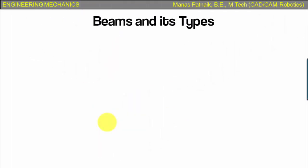Now let's take a look at the types of beams. Depending upon the type of support, the beams have been classified as follows. Let's have a look. Now this is the first type.